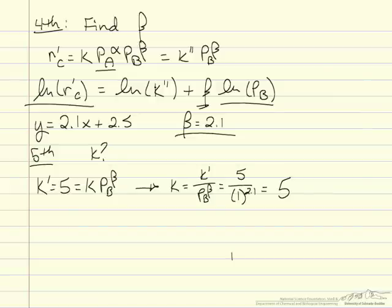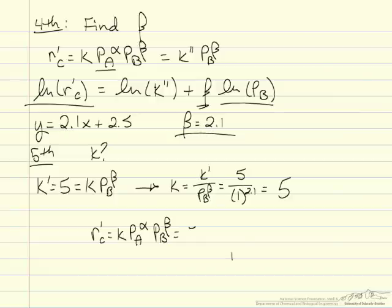Now that we know all the factors, we can rewrite the rate law with the actual values: the rate of appearance of C equals 5 times the partial pressure of A to the 1.9 times the partial pressure of B to the 2.1.